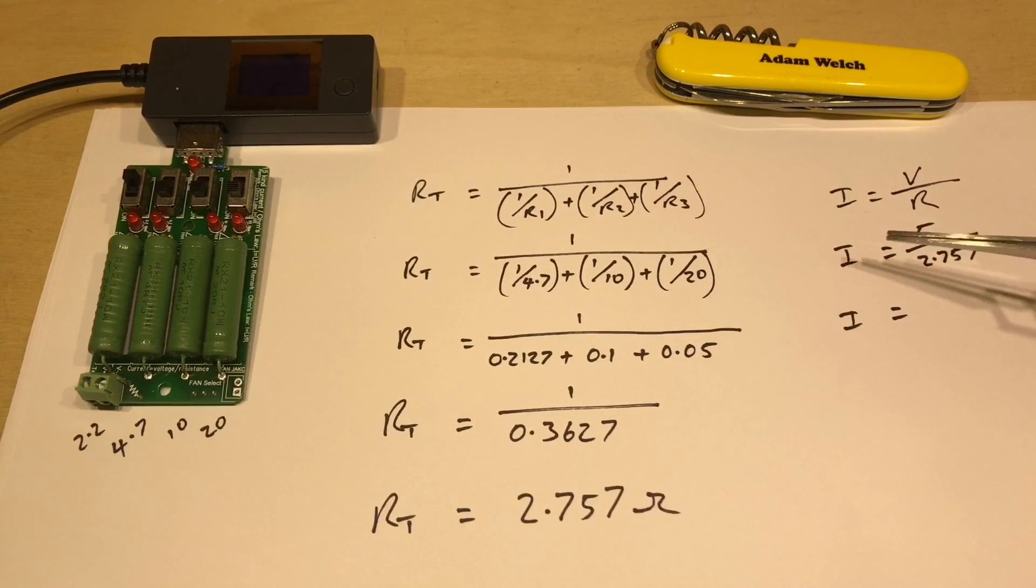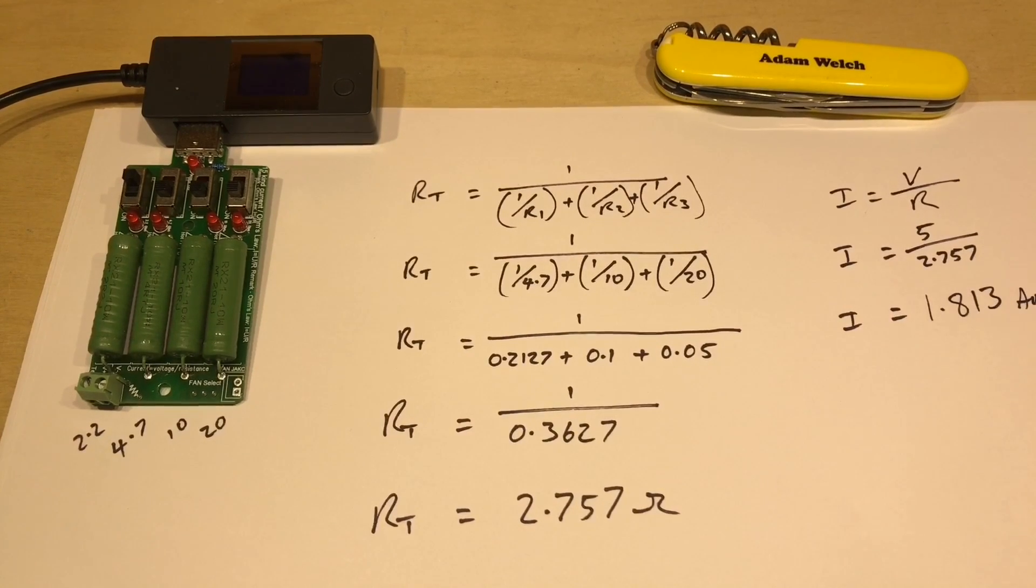And if we look at I equals V over R, now we're likely to get a higher current, so I am putting 5 volts in there, over 2.757 ohms. Well that gives me a current of 1.813 amps. So let's give that a go by turning on the power bank and in the top left hand corner we can see that we've got 5.01 volts and according to the port power here we're seeing 1.72 amps.